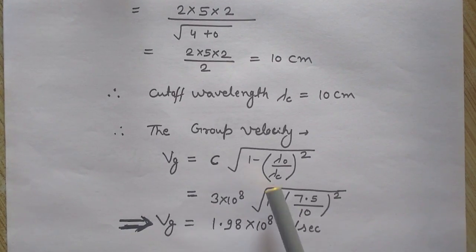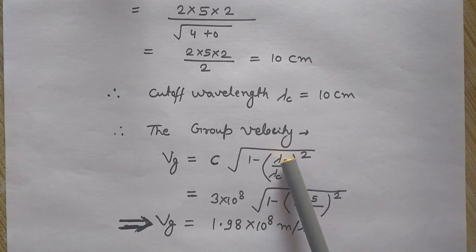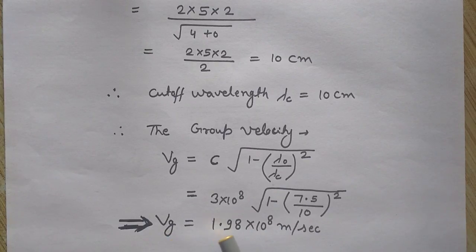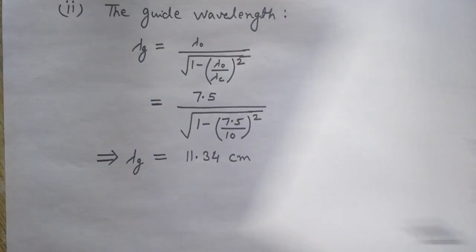And lambda 0, I have calculated 7.5. And lambda C, I have just calculated 10 centimeters. So it is 10. So just calculate it and you will get the group velocity equals to 1.98 into 10 to the power 8 meter per second. So I have calculated the group velocity also.